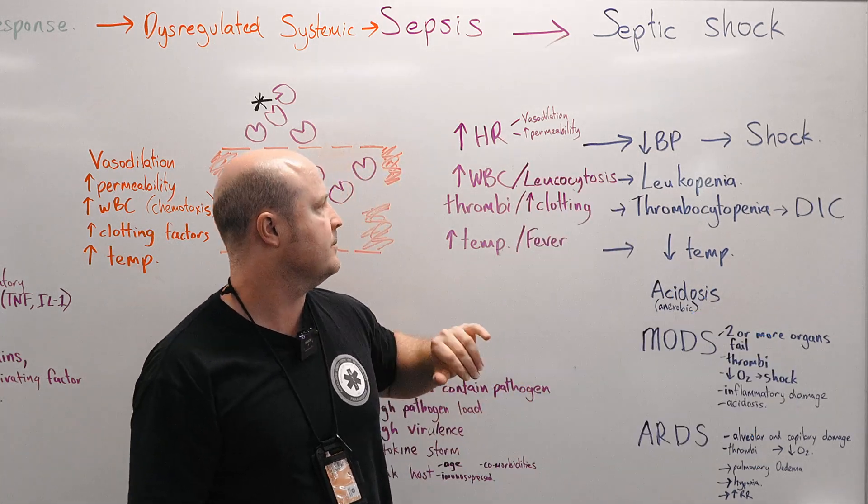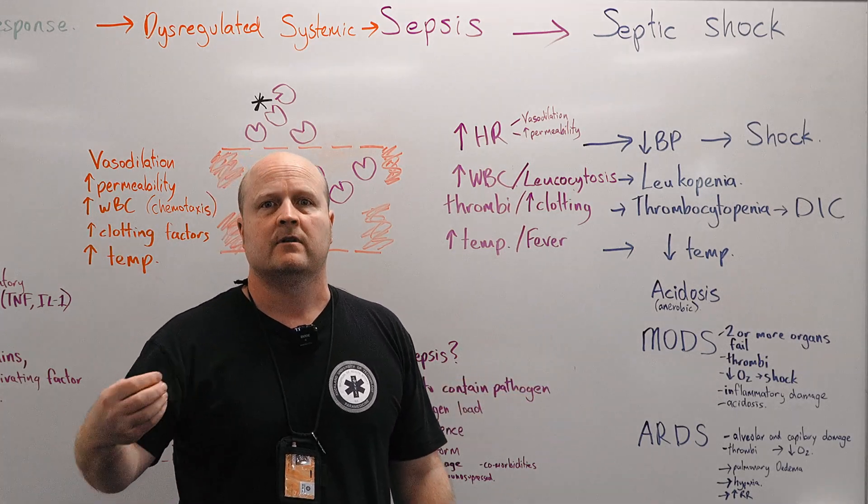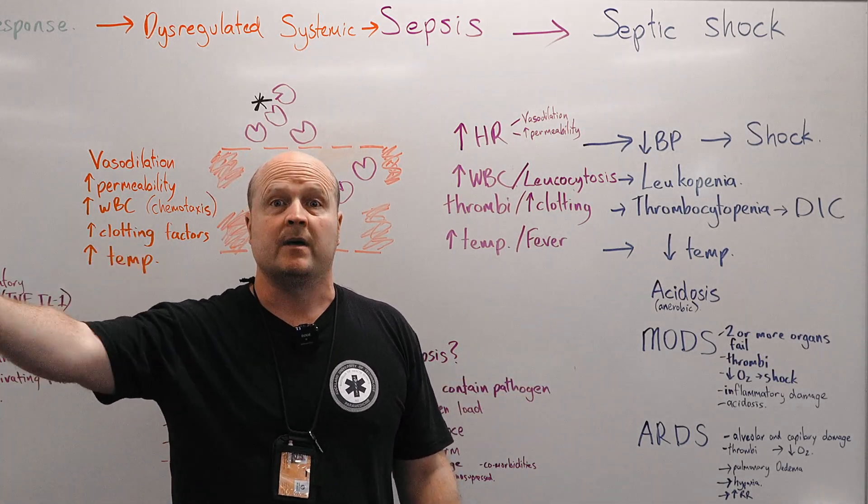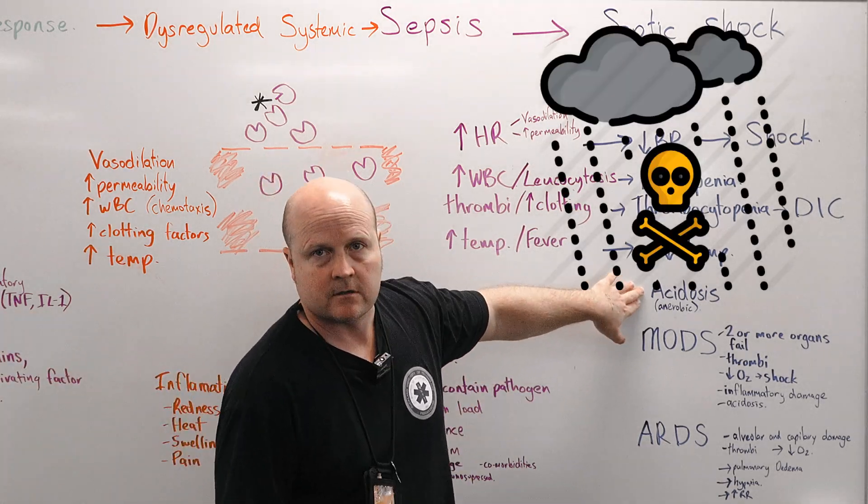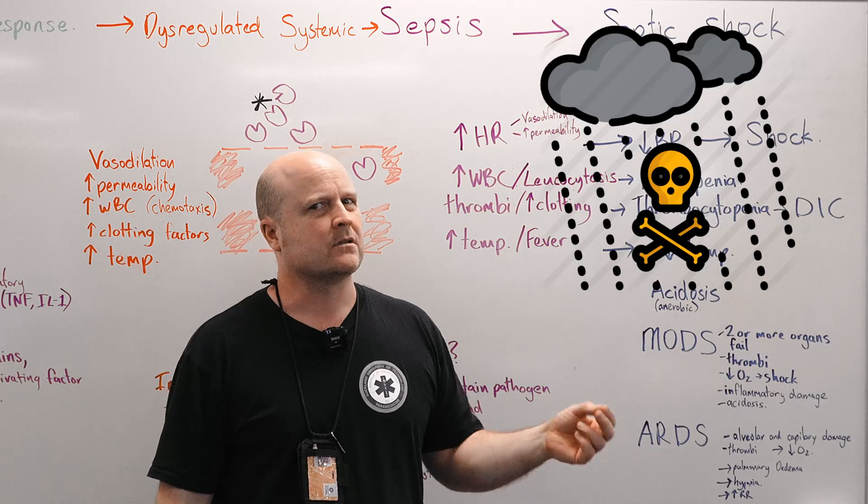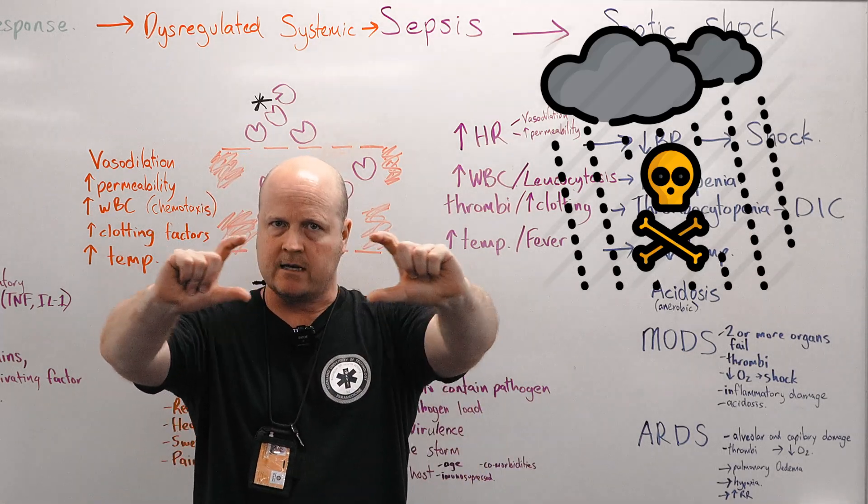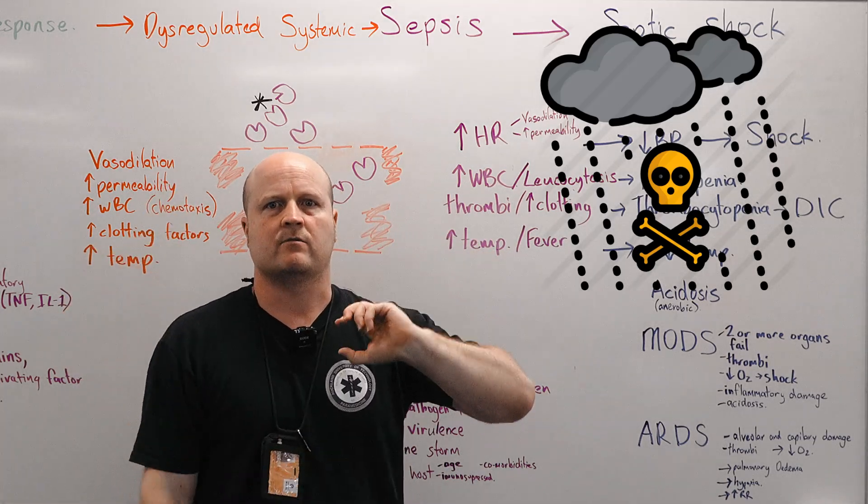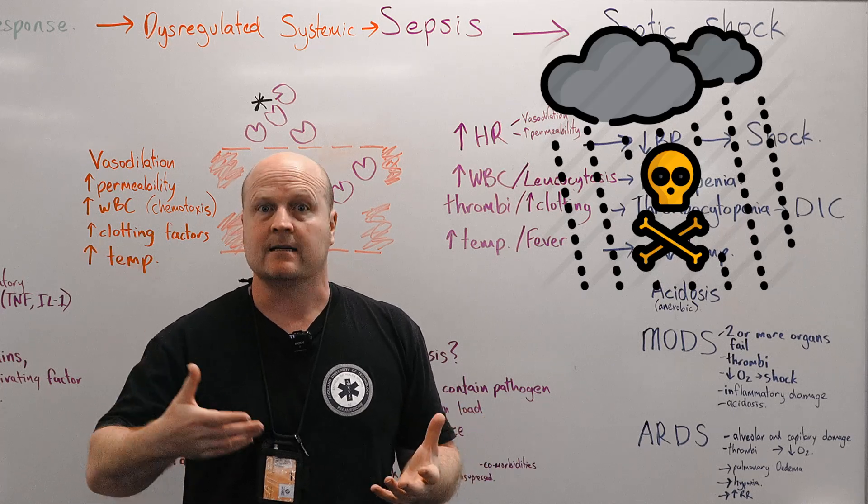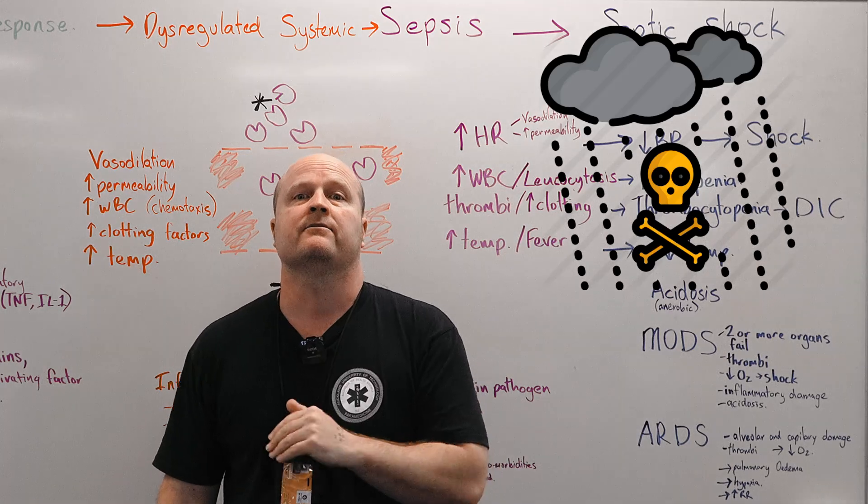The other problem with anaerobic metabolism is the byproduct of lactic acid and then our body becomes more acidotic. So acidosis. Acidosis is bad because our body works in a nice narrow range of pH. So if we dip out of that range, then all our body processes aren't going to start working as well as they should. And we're going to have organs starting to fail.